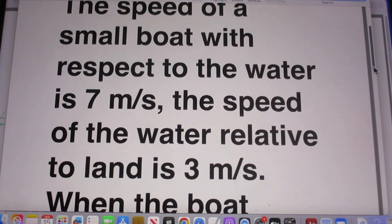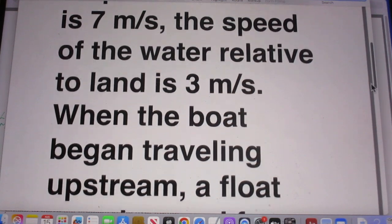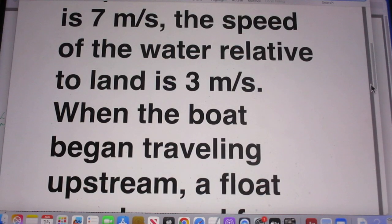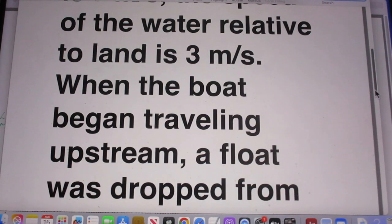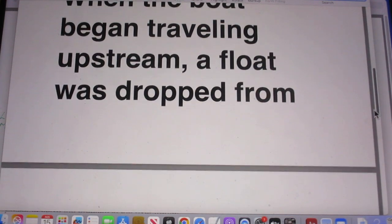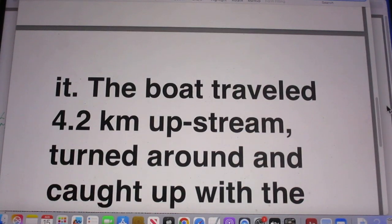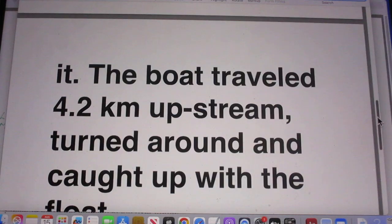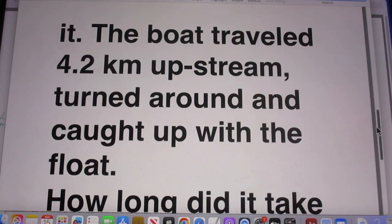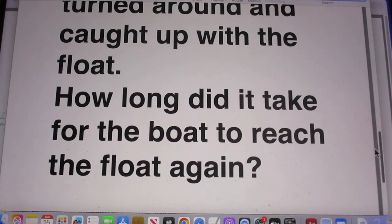The speed of a small boat with respect to the water is 7 meters per second. The speed of the water relative to land is 3 meters per second. When the boat began traveling upstream, a float was dropped from the boat. The boat traveled 4.2 kilometers upstream, turned around and caught up with the float. How long did it take for the boat to reach the float again?